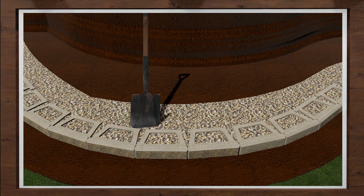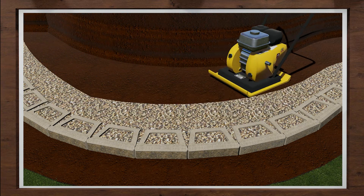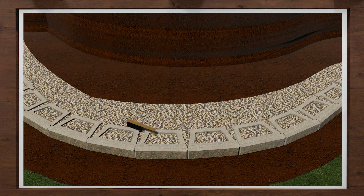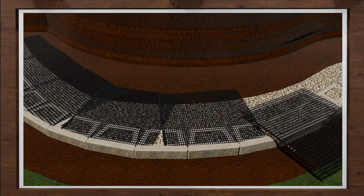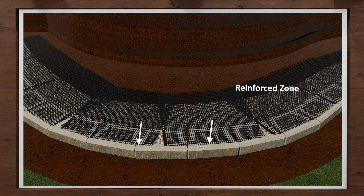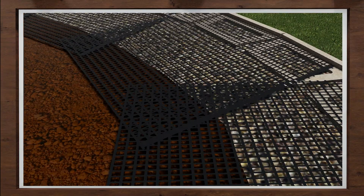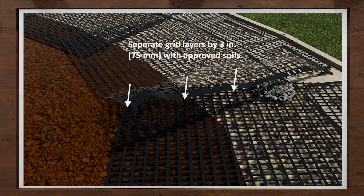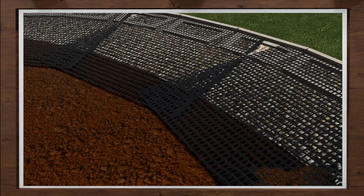Rake the top of the blocks clean and compact with a mechanical plate compactor behind the blocks a minimum of 2 passes. If the wall requires geogrid, cut the grid to length and lay it tight against the front lips of the blocks, positioned back into the reinforced zone. Trim the ends as needed to fit the grid along the front lips. Where the grid overlaps, place a 3-inch layer of infill material to separate them from one another.